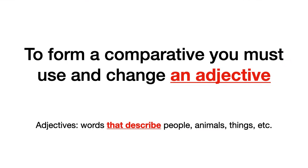So, to form a comparative, you must use and change an adjective. Para poder hacer comparativos nosotros debemos usar los adjetivos, pero no solamente usarlos, sino que tenemos que cambiarlos un poquito. ¿Qué es un adjetivo? An adjective — adjectives are words that describe people, animals, things, etc. Los adjetivos son palabras que me ayudan a describir.